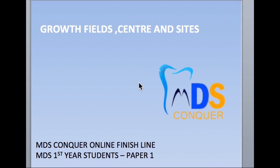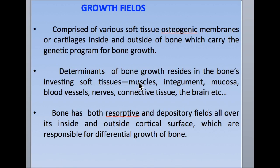Coming to the growth fields — this is nothing but the bones which are forming, enveloped in soft tissue like a mosaic pattern. The bony cells are sandwiched between the tissues, and the potential for bone growth lies in the soft tissues present, like nerves, blood vessels, connective tissue, brain, etc. It is inherently describing the functional matrix hypothesis.